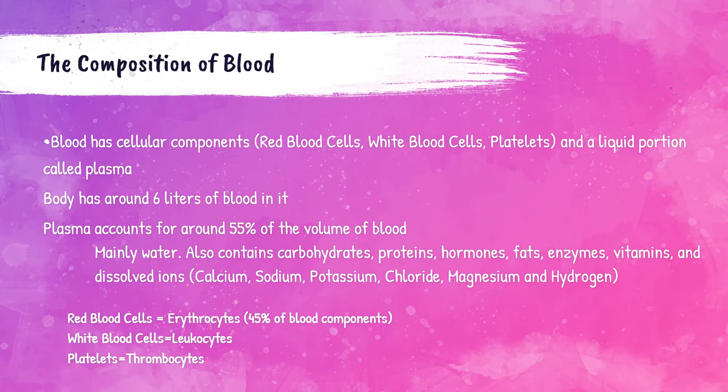In terms of blood cells, there are three main types: red blood cells, which are also called erythrocytes — these account for about 45 percent of the total content of blood — white blood cells, which are also called leukocytes, and platelets, which are also called thrombocytes.